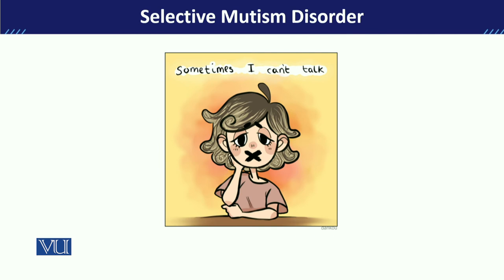Children with selective mutism generally tend to develop features of social anxiety as well. The main reason we say social anxiety features can develop is that social anxiety itself can lead many children toward selective mutism. This relationship between the two conditions is important to understand.